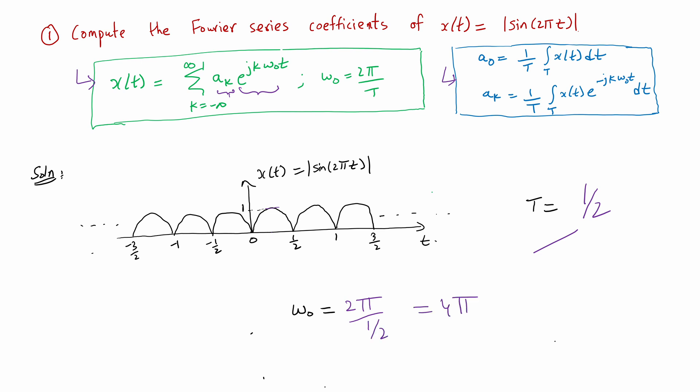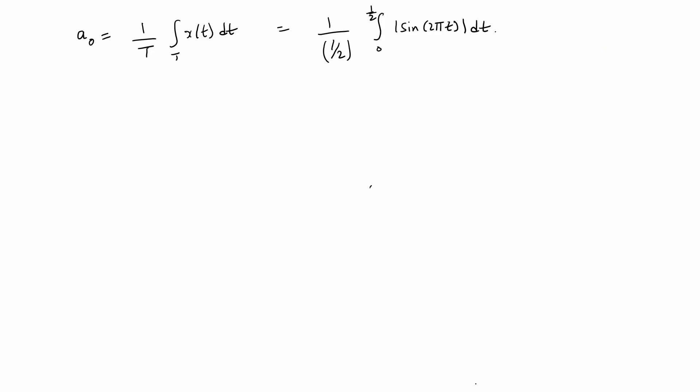Now that we know ω₀, our next step is to compute the Fourier series coefficients — that is, a₀ and the aₖ's for all non-zero k. Let's start with a₀ first. a₀ is simply the average value of the signal over one time period. This average value over a time period of 1/2 is given by (1/(1/2)) times the integral of the signal over one time period, choosing the interval from 0 to 1/2.